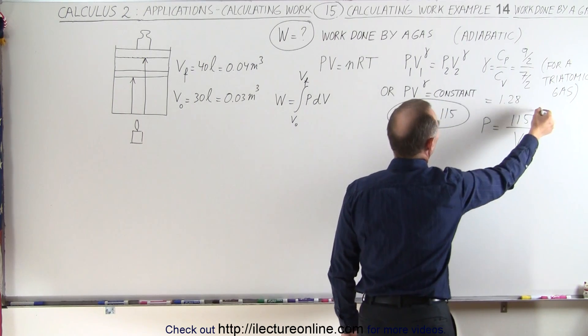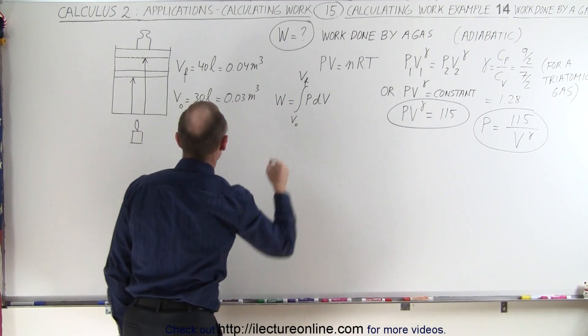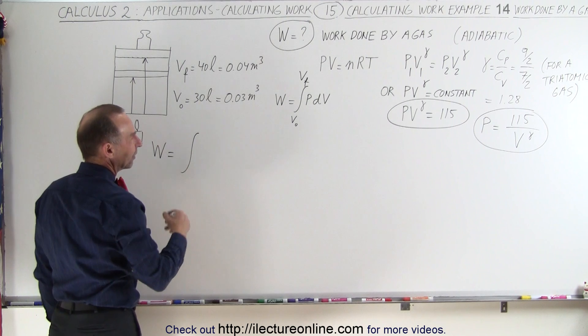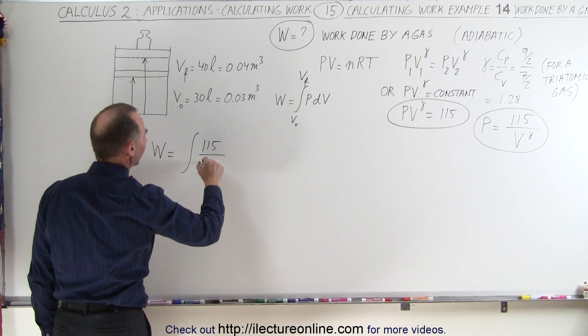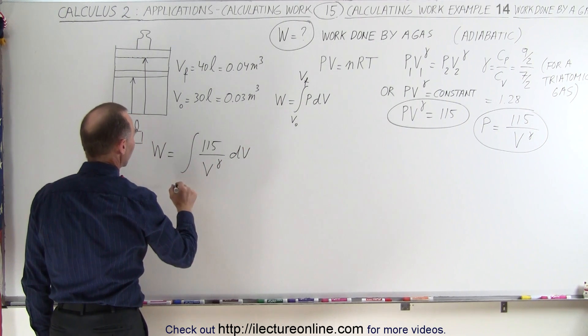This constant is just an arbitrary constant, it doesn't really matter. So now we plug it in. Now we can find that the work done is equal to the integral, instead of p we write 115 divided by v to the gamma times dv from v initial which is 0.03 cubic meters to v final which is 0.04 cubic meters.